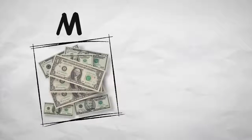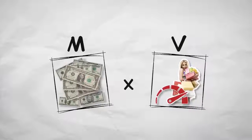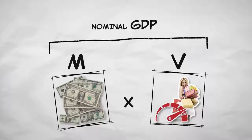Same thing over here. You take all our money, M, and multiply it by how many times the average dollar was spent, or V, and you get nominal GDP as well.